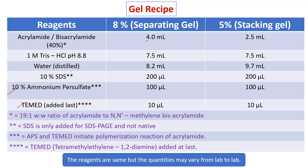Mix acrylamide, bisacrylamide, buffer, and water gently — no air bubbles while mixing. Add ammonium persulfate and TEMED; if doing native, those are the ingredients; if doing SDS, SDS is an additional reagent. As soon as you add APS and TEMED, give a gentle stir and immediately pour into the gel unit. If you keep it too long, the gel will polymerize in the container and become a semi-solid lump — then you have to cast another gel.